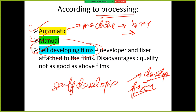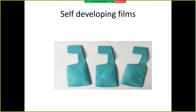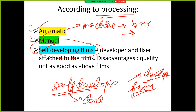What is self-developing? In self-developing films, a dark room is not required. The disadvantage is that the quality is not as good as with automatic or manual processing.